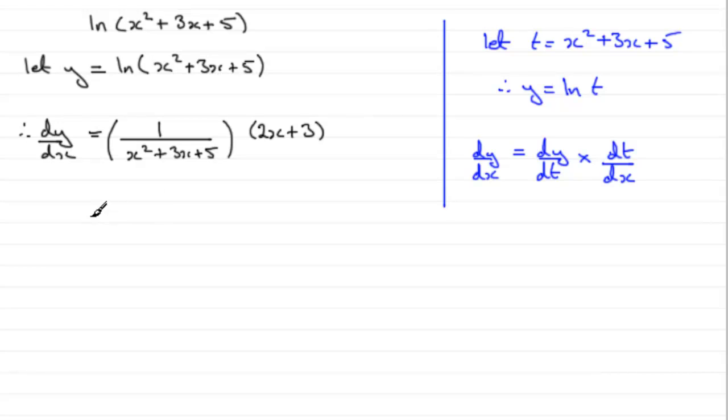All we need to do now is tidy this up. So it'll be 1 times 2x plus 3, which is 2x plus 3, all divided by x squared plus 3x plus 5. This quadratic factor doesn't factorise. So that's it.